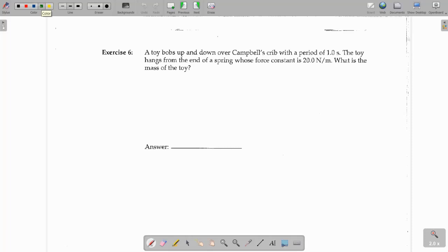A toy bobs up and down over Campbell's crib with a period of one second. So, that's a period of a spring. The toy hangs from the end of a spring whose spring constant is 20 newtons per meter. What is the mass of the toy?